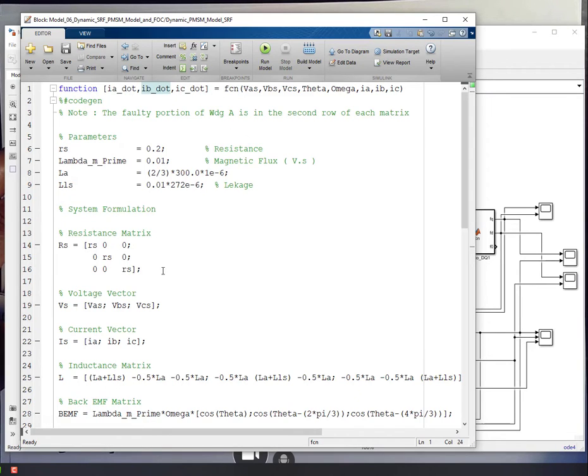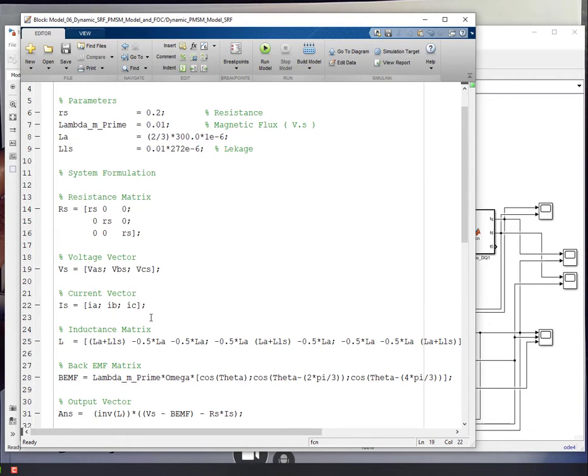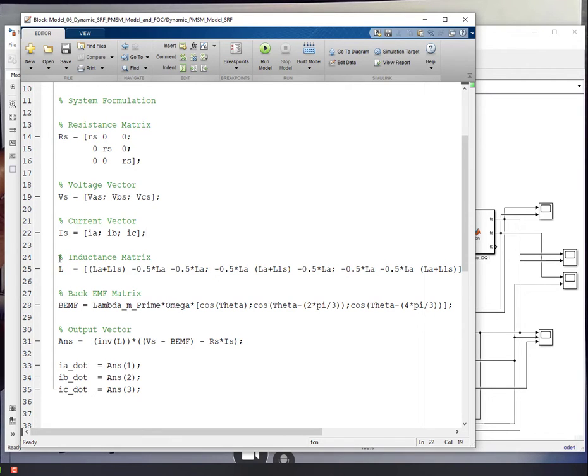So here we make the resistance matrix. Here we make the voltage vector. In this line, we are making the current vector. And then here we are making the inductance matrix.